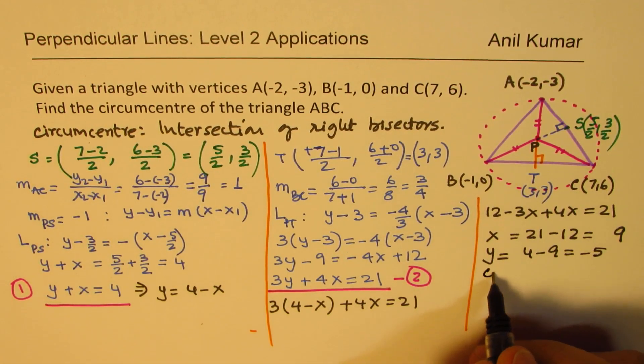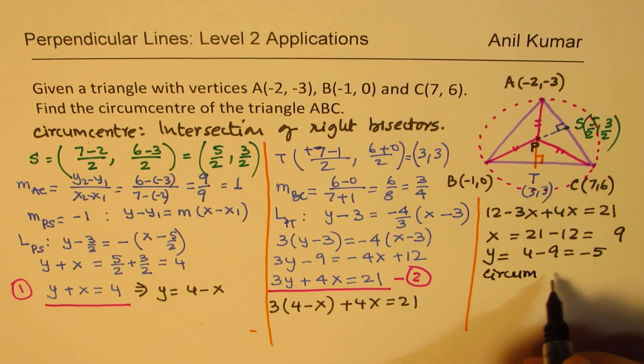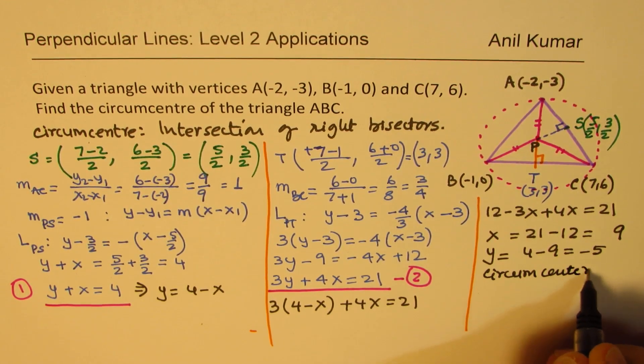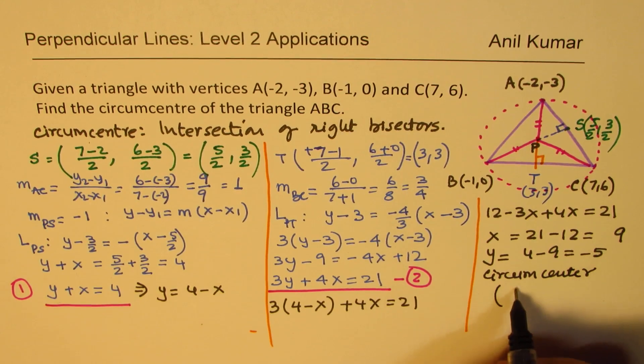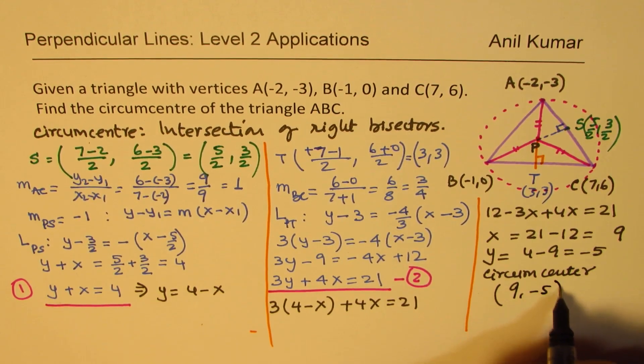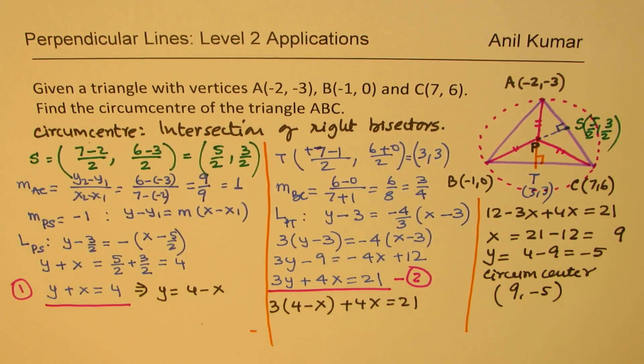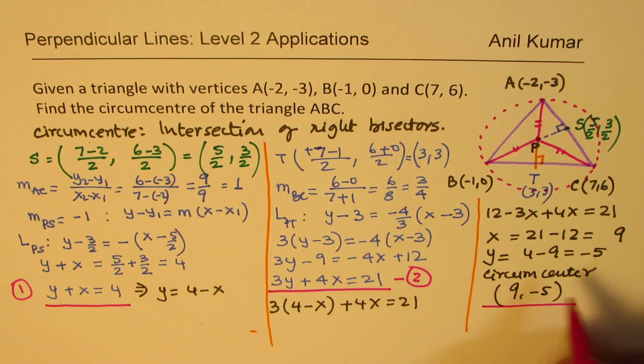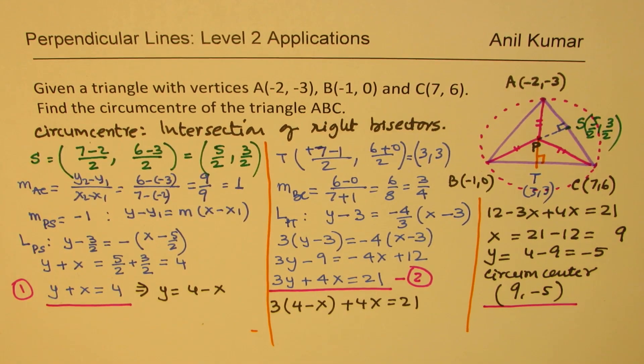So for us, the circumcenter, in our case, is going to be (9, -5). So that is how we can use the perpendicular lines and find the circumcenter of a triangle. I hope you find it interesting and useful. Feel free to write your comment, share your views. And if you like and subscribe to my videos, that'd be great. Thanks for watching and all the best.